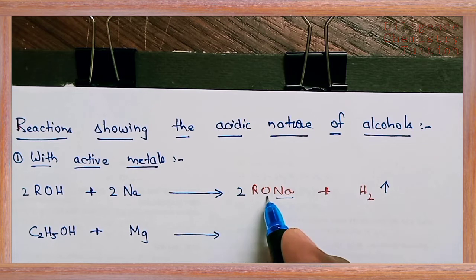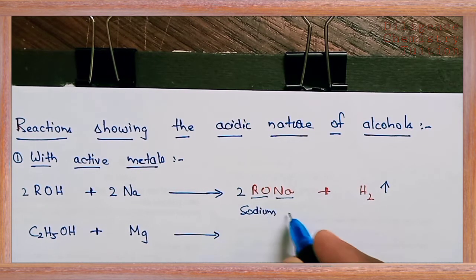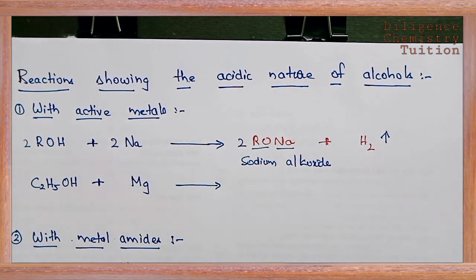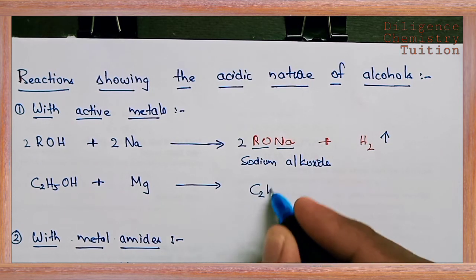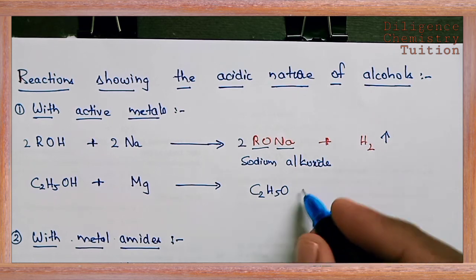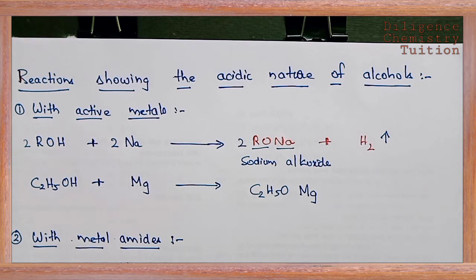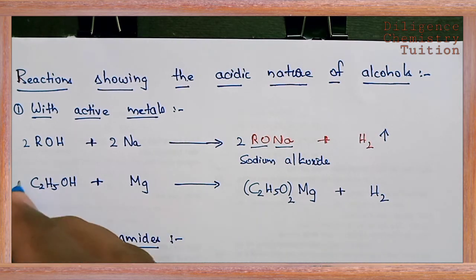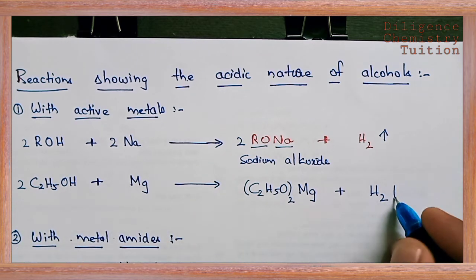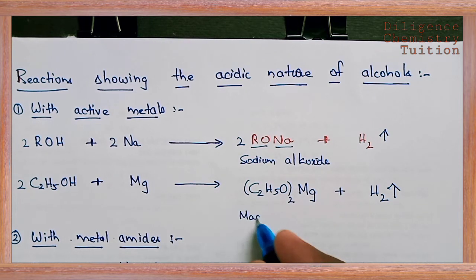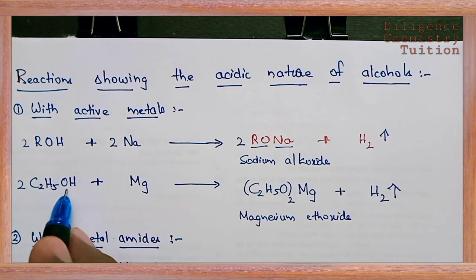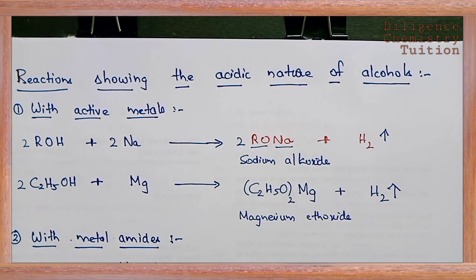So we obtain sodium alkoxide. For example, ethyl alcohol reacts with magnesium. Ethyl alcohol is C₂H₅OH, giving ethoxide ion C₂H₅O⁻. Magnesium is Mg²⁺, so using crisscross: (C₂H₅O)₂Mg is formed, plus hydrogen gas is liberated. This product is magnesium ethoxide. These reactions demonstrate the acidic nature of alcohols.